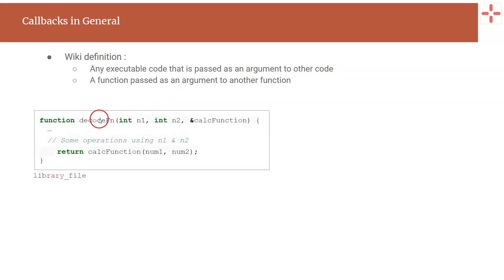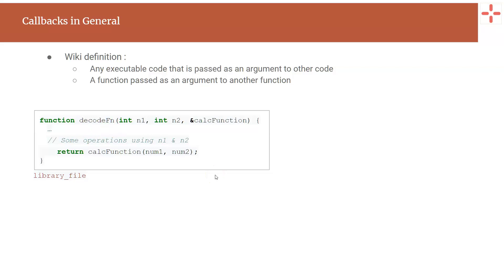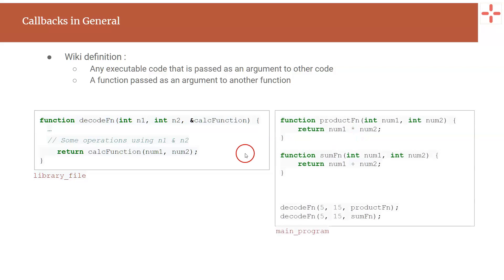Here is an example. This function named decode function takes a few arguments and also takes another argument which is a pointer to another function, and it calls that function within itself. This whole code may be present in some library component, and when a user is using this function in their main program, they will first define the function to be passed as an argument to the decode function, and finally call the original function along with these new functions according to the use case.